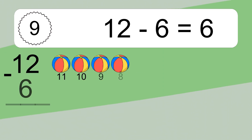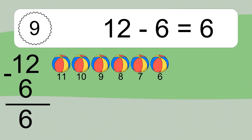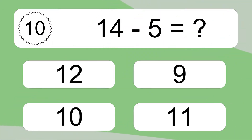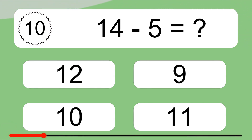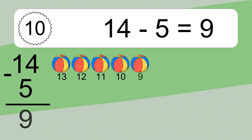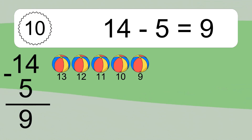12 minus 6 equals what? 12 minus 6 equals 6. Let's count it: 11, 10, 9, 8, 7, 6. 14 minus 5 equals what? 14 minus 5 equals 9. Let's count it: 13, 12, 11, 10, 9.